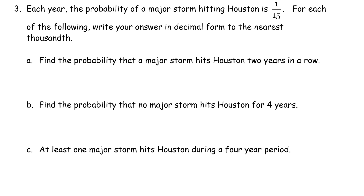Number 3: each year, the probability of a major storm hitting Houston is 1 out of 15. For each of the following, write your answer in decimal form to the nearest thousandth. By default for this class we round to the nearest hundredth, but since this problem says nearest thousandth, we have to make sure to do that.